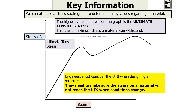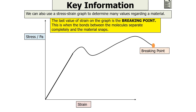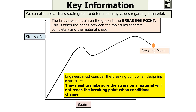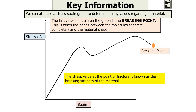Engineers must consider the UTS when designing a structure, ensuring the stress on a material will not reach the UTS when conditions change. The breaking point is the last value of strain on the graph — when the bonds between molecules separate completely and the material snaps. Engineers must also consider the breaking point. Strong materials have a high UTS and a high breaking point. The stress value at the point of fracture is also known as the breaking strength of the material.